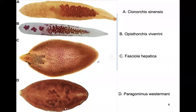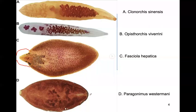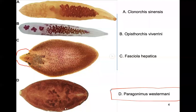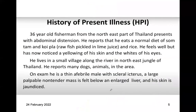These are some images of these liver flukes. A is Clonorchis sinensis, B is Opisthorchis vivarini. This one is Fasciola hepatica — the difference between Fasciola gigantica and hepatica is this cephalic cone present in Fasciola hepatica. We also have Paragonimus westermani, which is one that looks really beautiful, but Paragonimus is a lung fluke, so we will not discuss it in detail here.